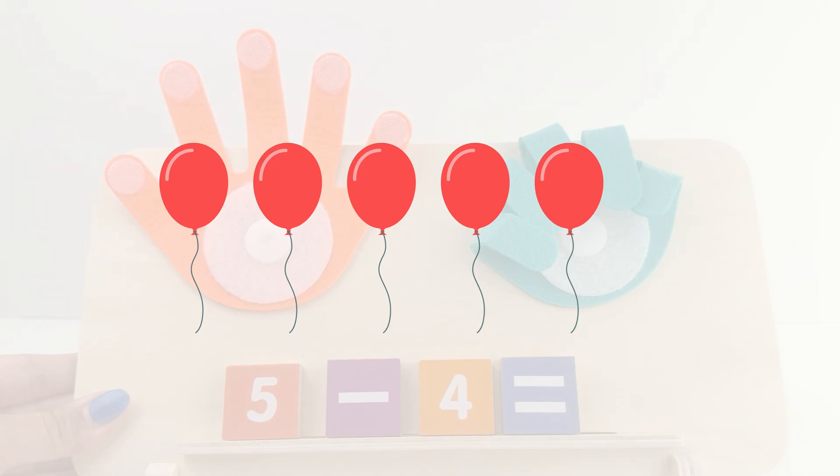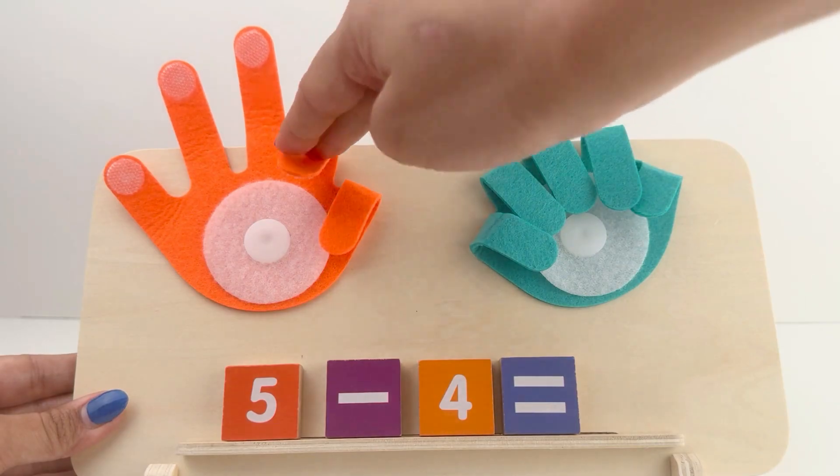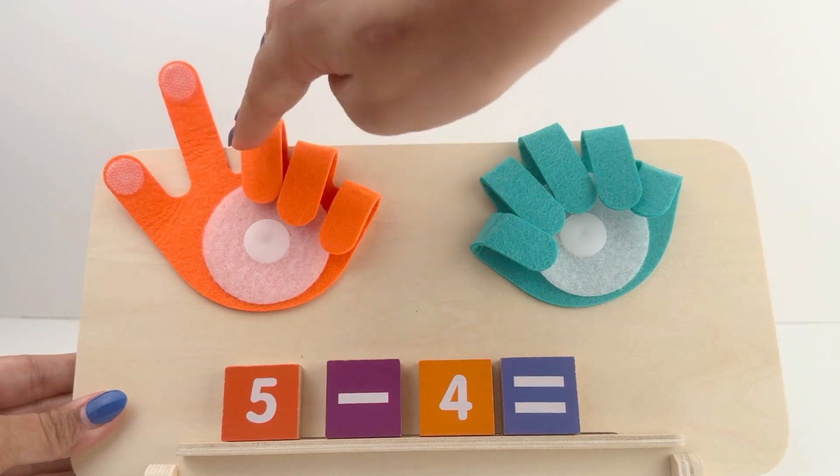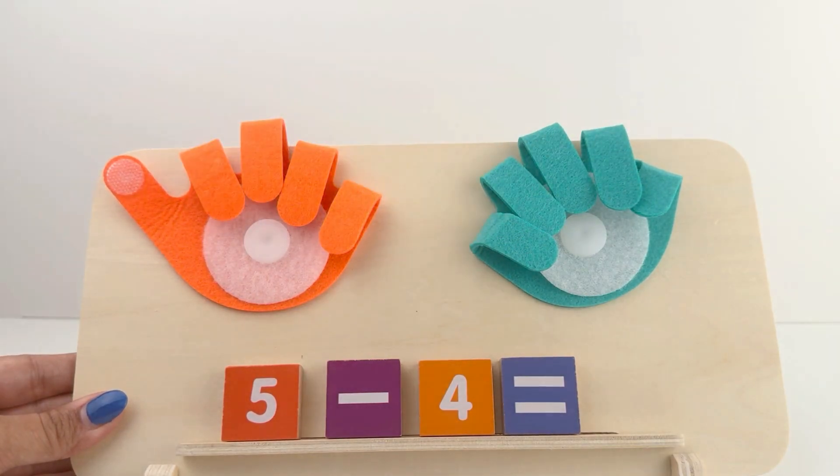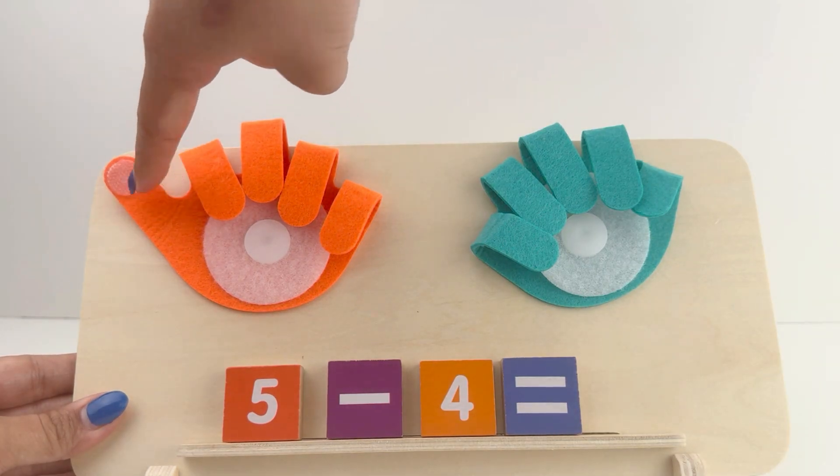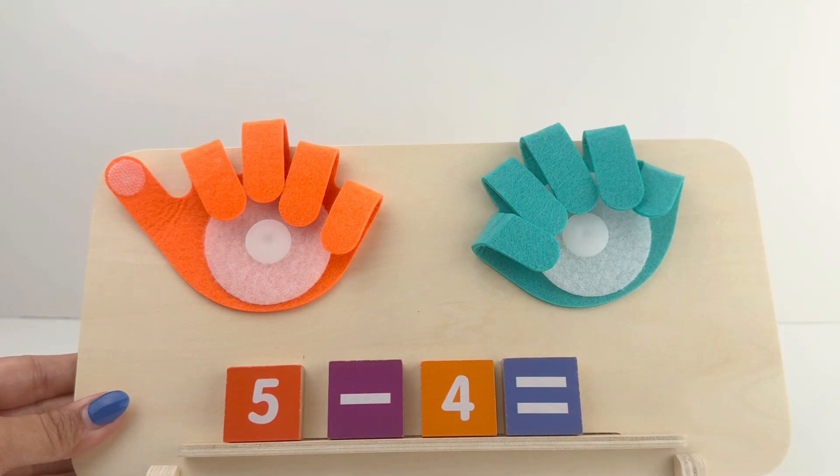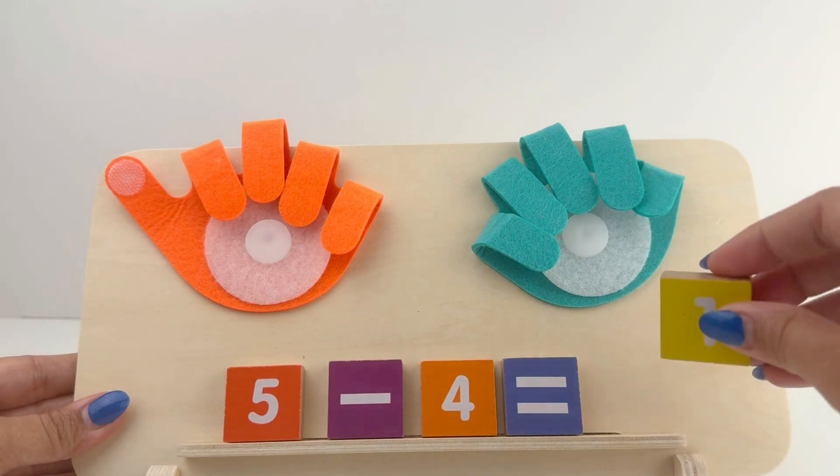And out of those 5 balloons, 4 balloons burst. Now, let's close fingers on your left hand. 1, 2, 3, 4. How many fingers are you left with? Now, let's count. 1. You're left with 1 balloon. 5 minus 4 equals 1.